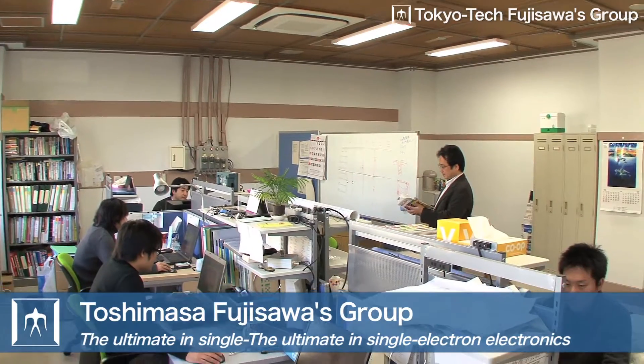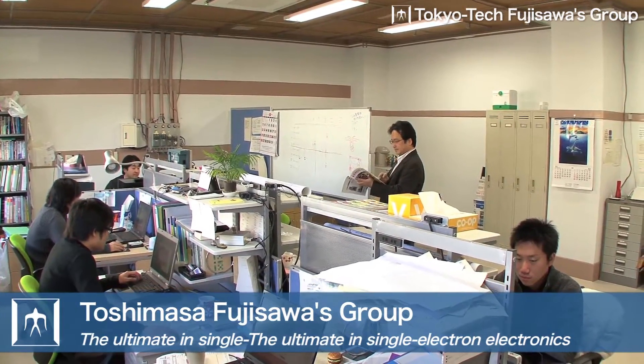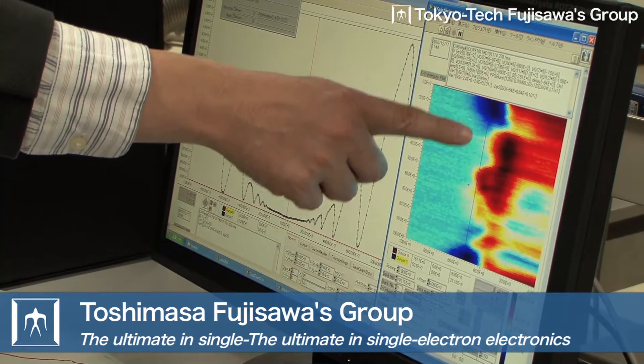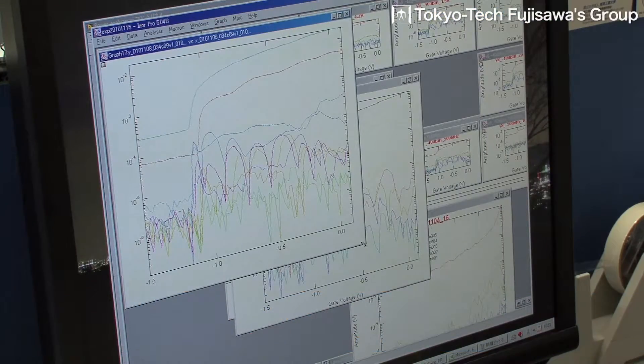The Fujisawa Group at Tokyo Institute of Technology is working to find out how precisely the behavior of single electrons can be controlled and measured.